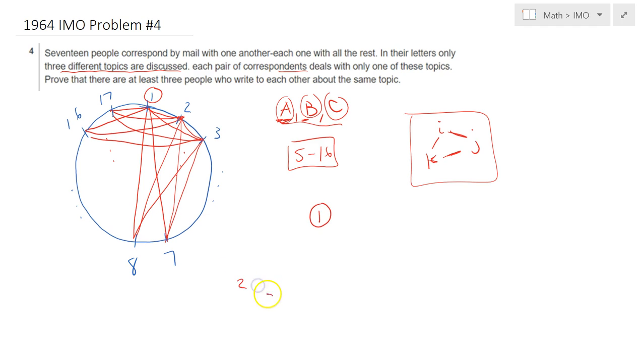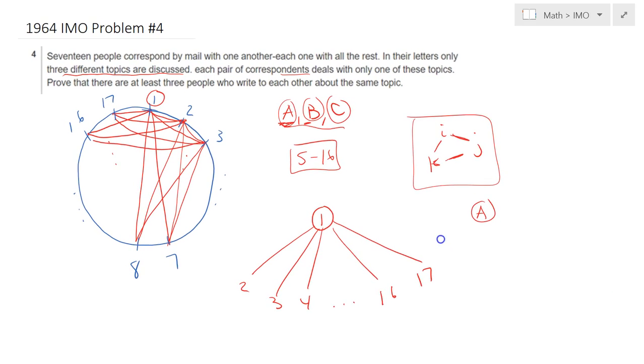So I will make use of pigeonhole principle to establish that among all these correspondences that one has with the remaining 16 people, at least one topic, let's pick topic for instance A, at least one of the topics would be with the remaining 6 people. So I claim that at least number 1 talks with 6 people the same topic.